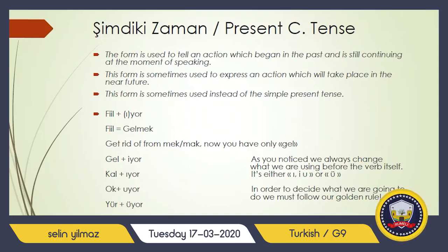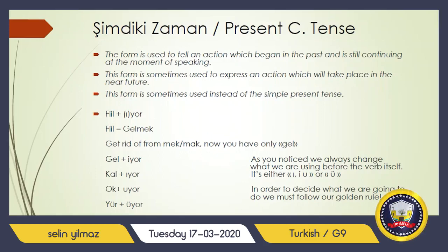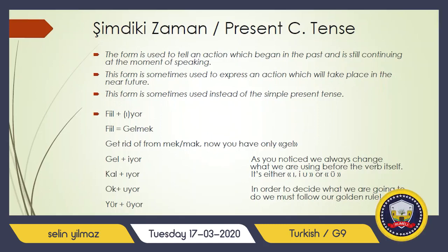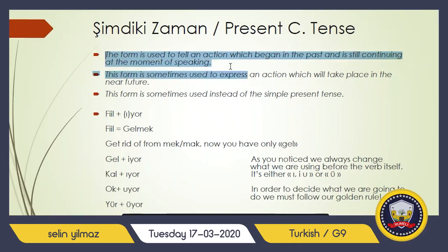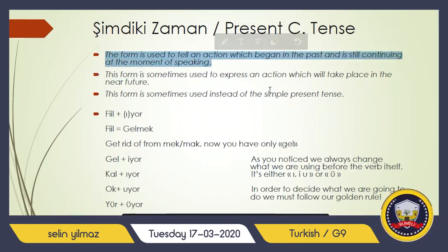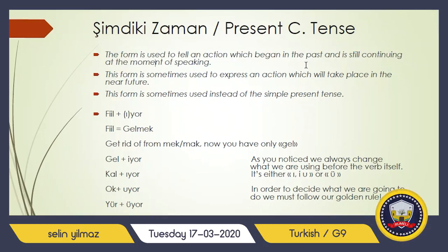Şimdiki zaman — present continuous tense in English. This form is used to tell an action which began in the past and is still continuing at the moment of speaking. This form is sometimes used to express an action which will take place in the near future, and sometimes used instead of simple present tense. You are going to use the first usage here. This action is beginning in the past and is still continuing.